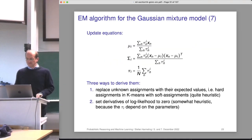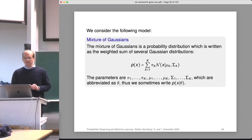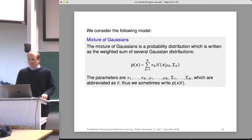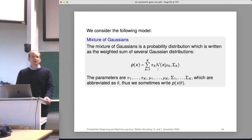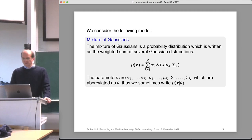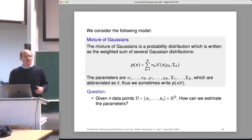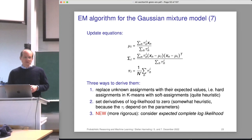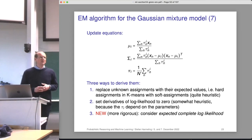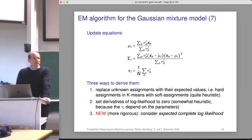We were looking at the Gaussian mixture model. We considered this model where we have a mixture of Gaussians, which is basically a summation of several densities that are weighted. This comes up naturally if we introduce a latent variable. The question is: given some data, how can we estimate the parameters of our model? We've seen that these update equations are a soft version of the k-means algorithm — that was our first way to derive it.